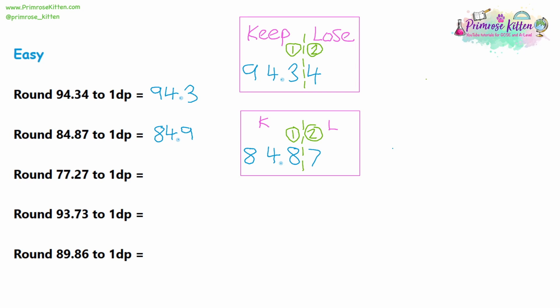Question three: we have 77.27. Label the decimal places — first and second decimal place. We're rounding to one decimal place, so rule off after the first decimal place. We're keeping 77.2, but before writing it down, let's check if we're rounding up. The first number we're losing is a seven — that is five or higher, so we are rounding up. The answer is 77.3.